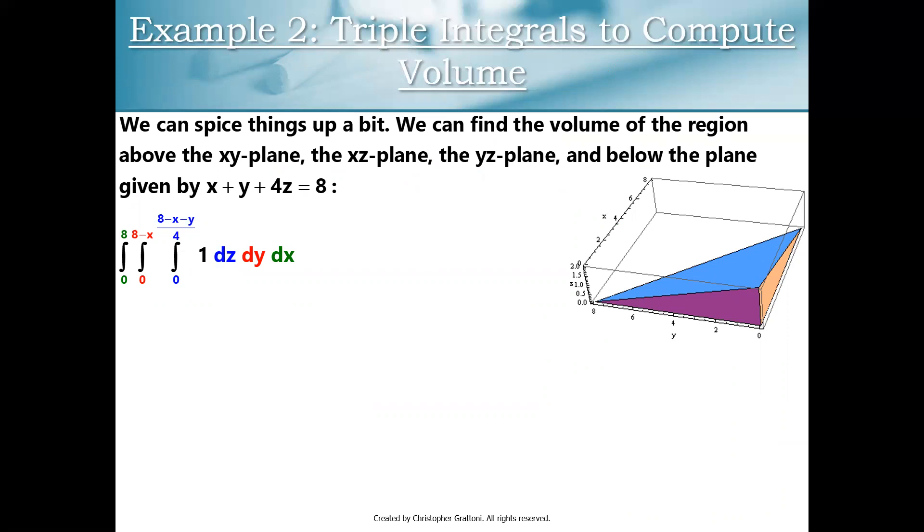If we want to crunch some numbers here, pretty straightforward. The integral of 1 with respect to Z equals Z. Then we plug in Z top and Z bottom. Our integrand now for our double integral is going to be 8 minus X minus Y. And then we're going to keep working through this. Notice I took a 1 fourth out just to get that out of the way.